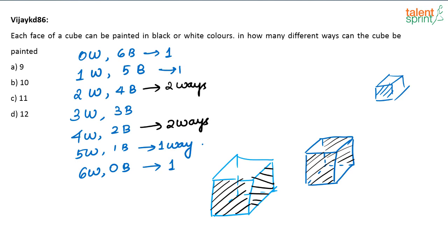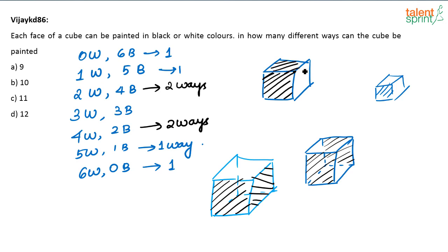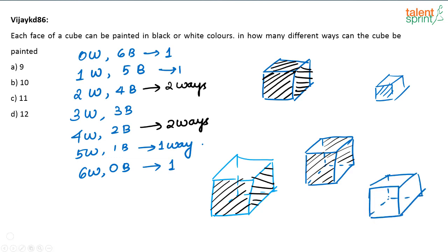Now for three whites and three blacks — how many ways can that be done? There are two ways. One way is to paint black on three sides that all share the same corner. White goes to the remaining three sides. The other way is to paint black on sides that do not all share the same corner — for example, two opposite sides and one other side. So this can also be done in two ways.